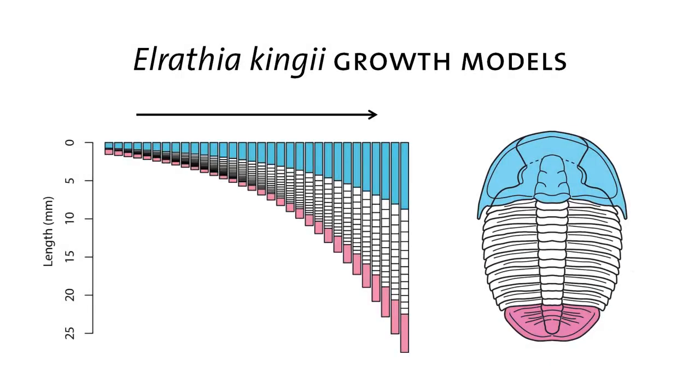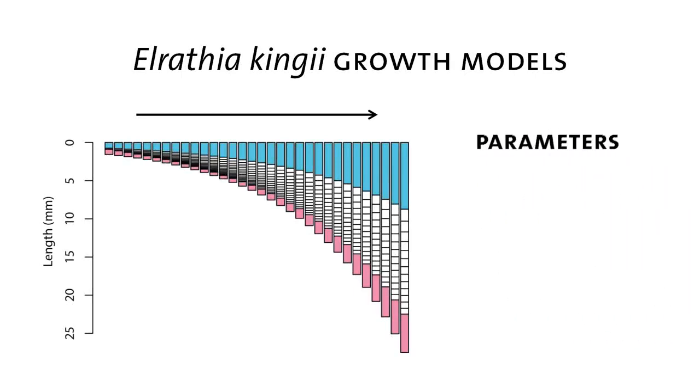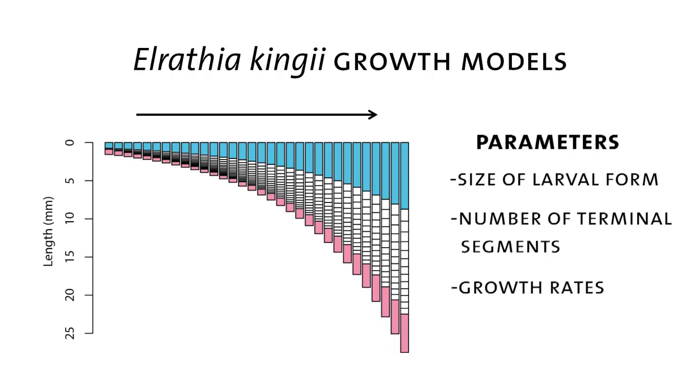We have enough data from enough species now that we can actually model this process. And so what I've done here is I've modeled growth for Elrathia kingii. And there are a lot of different parameters that go into this model. There are parameters that determine the original size, the size of the larval form when it first starts to molt and add segments. There's a parameter that determines the number of segments that are added and how many will be in the adult trilobite, the terminal number of segments. And there are also a bunch of parameters that determine the growth rates of all these different parts and allow for those rates to change during development.